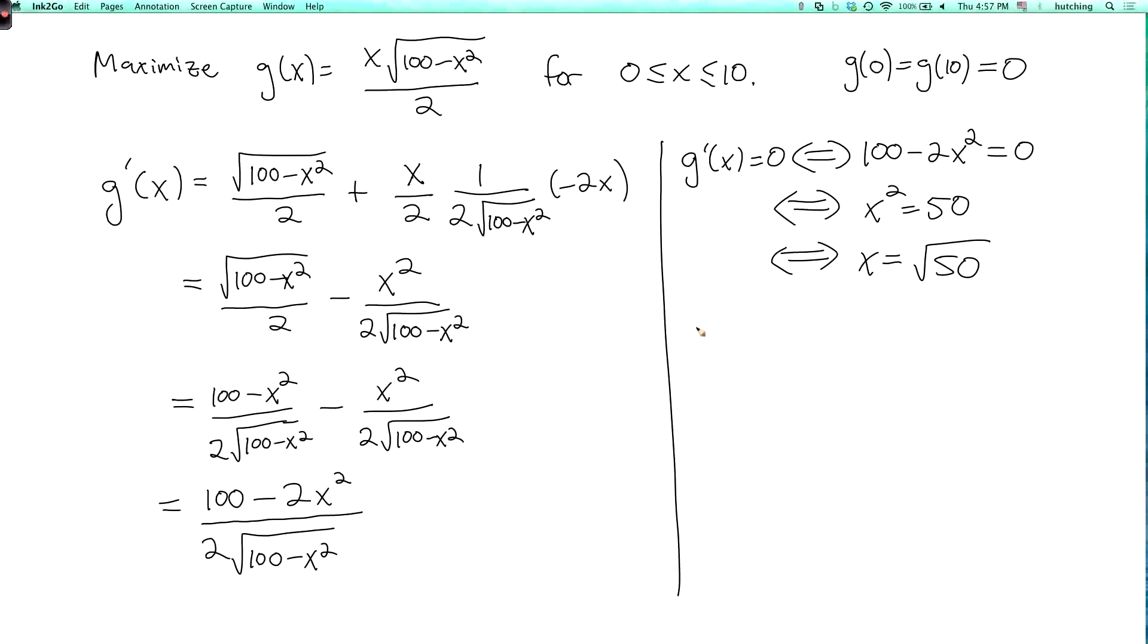And so then for this x, well y is the square root of 100 minus x squared, and if I put in x equals the square root of 50 then I get that y is also the square root of 50. And so the maximum is f of square root of 50, square root of 50, which is 50 over 2 which is 25.